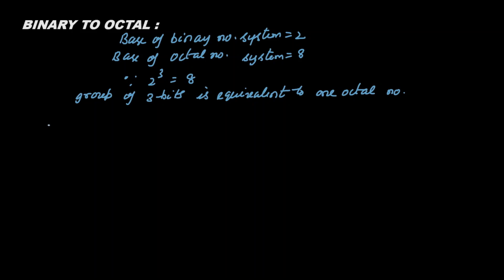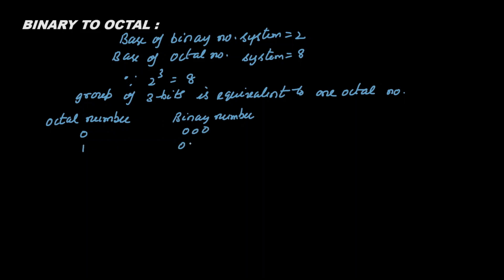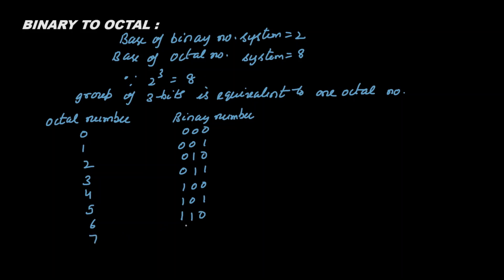For simplicity, let us make a table here with octal numbers and their binary equivalents. Each octal number is written in three bits: zero is 000, one is 001, two is 010, three is 011, four is 100, five is 101, six is 110, and seven is 111. This table will make our conversion simple.